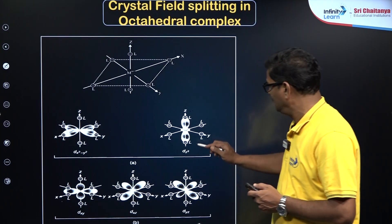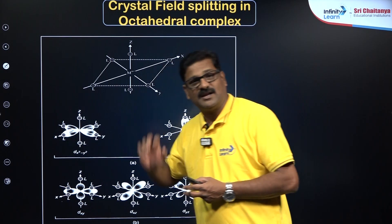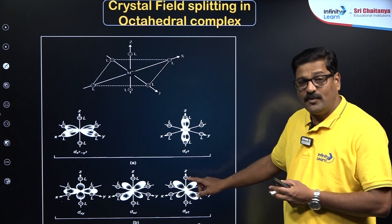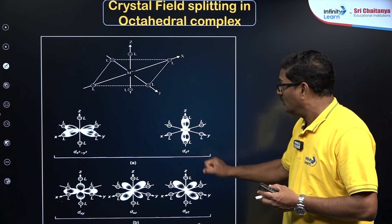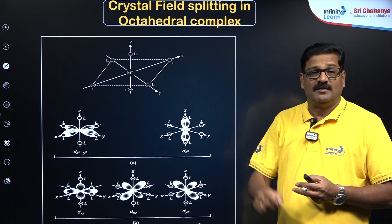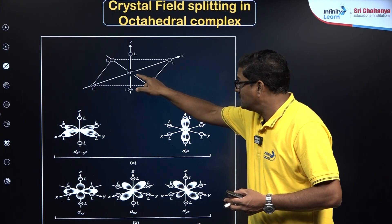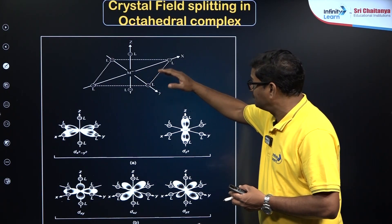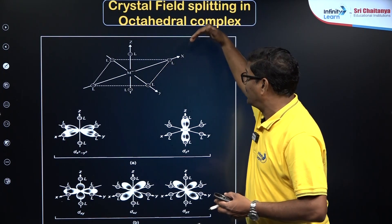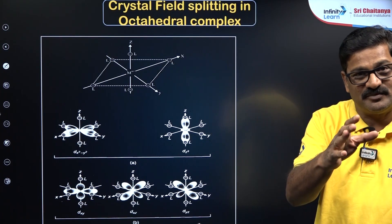The dx²-y² and dz² orbitals are present along the axis — axial orbitals — while the dxy, dyz, and dzx orbitals have lobes present between the axes. Whenever a ligand approaches along an axis direction, if the lobe is present on that axis, they experience more repulsion and become more energetic. If the lobe is between axes, they experience less repulsion and are less energetic.